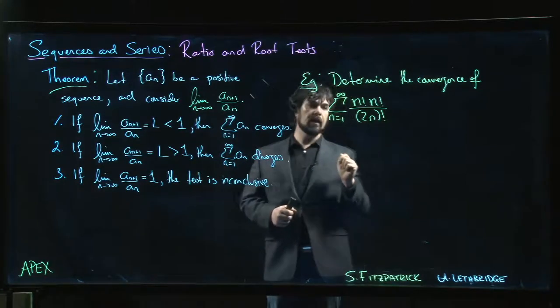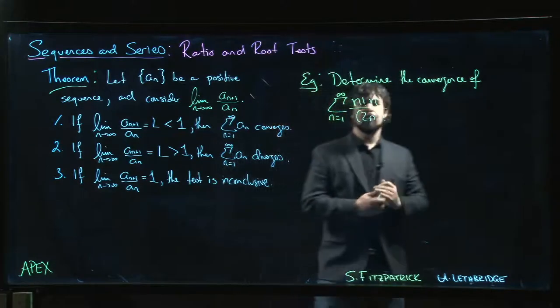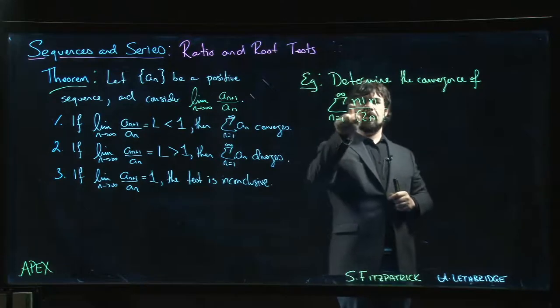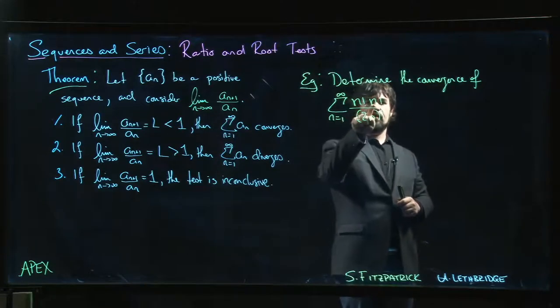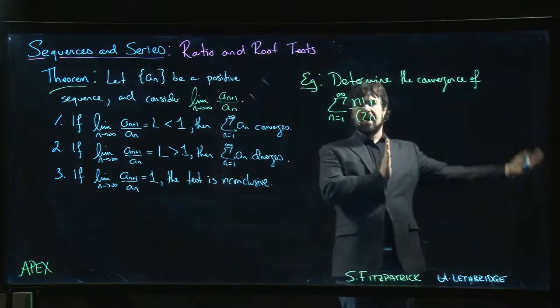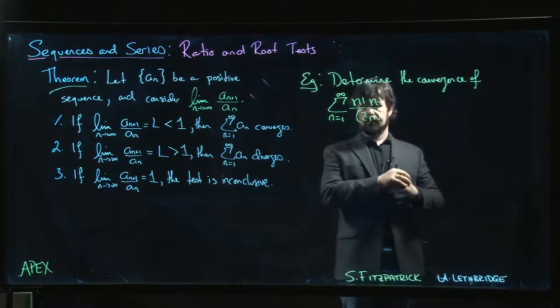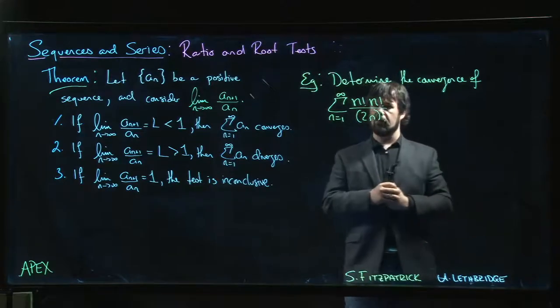All right, is it bigger than n factorial squared? Yeah, of course, because here you multiply by the first n integers and then you multiply by the first n integers again. Down here you multiply by the first n integers and then you multiply by the next n integers. It's a lot bigger. Okay, so the denominator is definitely larger than the numerator.